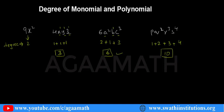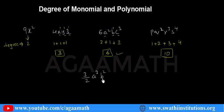Let me take one more example: (3/2)a³b². What is its degree? It is simple — the variables are a and b, and their powers are 3 and 2 respectively. Just add them: 3 plus 2 equals 5.